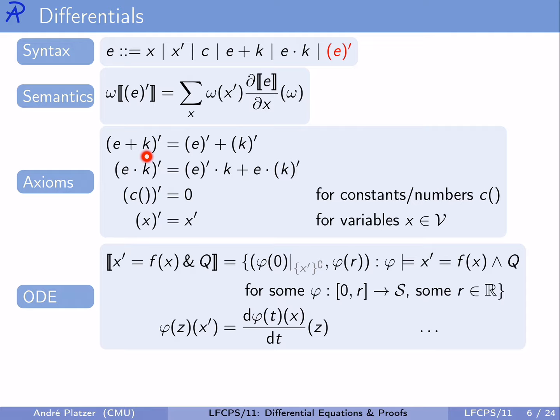We use these differentials for good by understanding that very familiar axioms are true about them — for example, that the differential of a sum E plus K equals the differential of E plus the differential of K; the Leibniz rule that the differential of E times K equals (E-prime)(K) + E(K-prime); the differential of a constant is 0 since constants have no variables; and the differential of a variable is exactly the corresponding differential symbol x-prime.